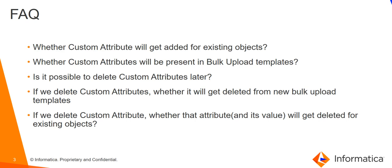The last question is: if we delete a custom attribute, will that attribute and its values be deleted for existing objects? Yes. Suppose you created a custom attribute, provided values for some existing objects, and later delete it — the instance returns to the same state as if the attribute never existed. It gets deleted from bulk upload templates and from every object. Any values previously saved for that attribute will also be deleted and you will no longer see the attribute or its values anywhere.